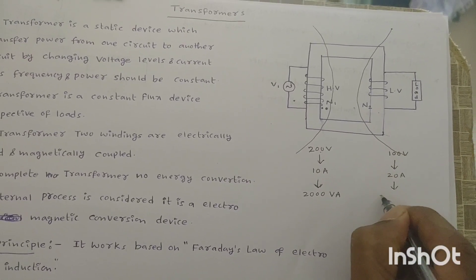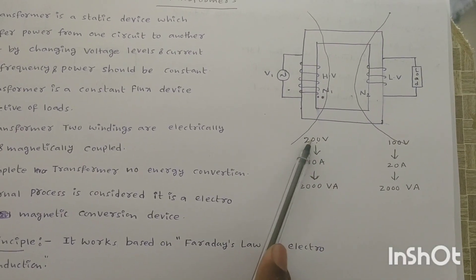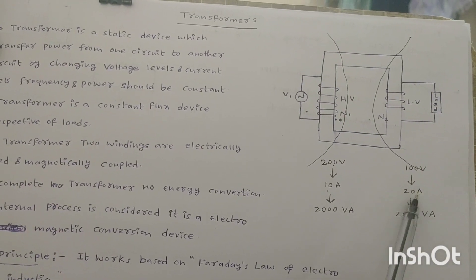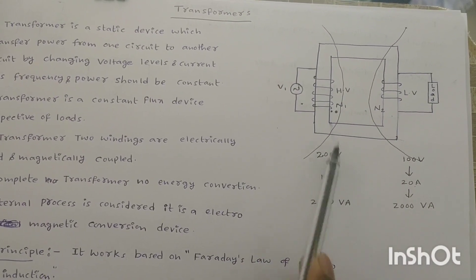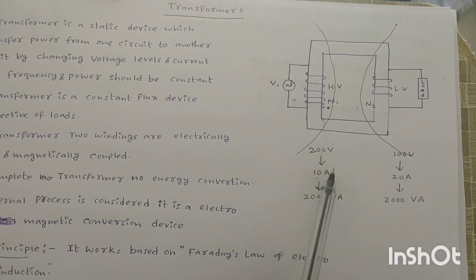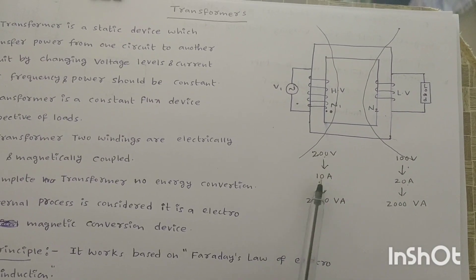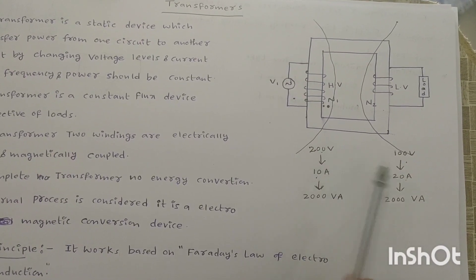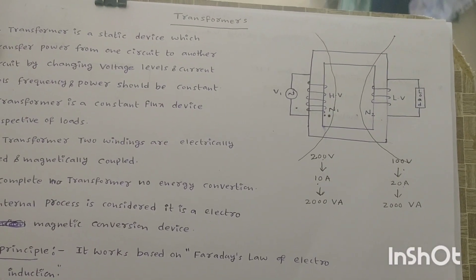On the secondary low voltage side, the rated current is 20 amperes, so power is 100 × 20 = 2000 volt-amperes. Notice that on the high voltage side the current magnitude is low, and on the low voltage side the current magnitude is high. For a 200/100 volt transformer, voltage levels and current levels change, but power and frequency remain constant.